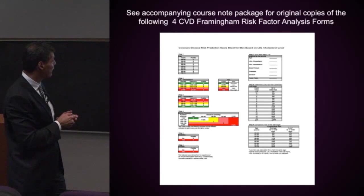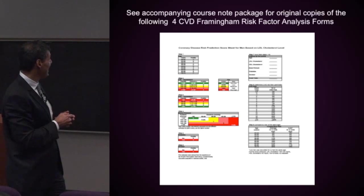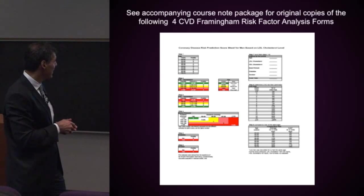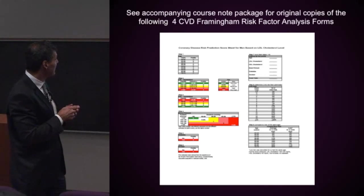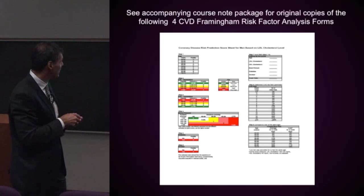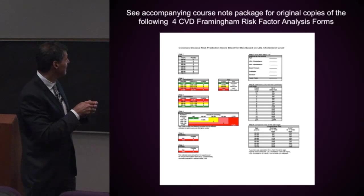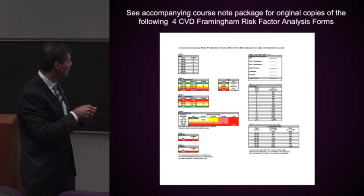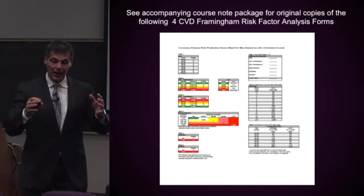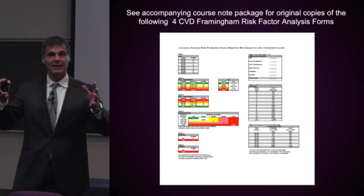Here we have a form for men — known as the LDL cholesterol form — because it looks at the person's age, their LDL cholesterol, HDL cholesterol, blood pressure, whether they're diabetic, and whether they're a smoker. A number of points are awarded based on those scores. You add up the points for age, LDL, HDL, blood pressure, diabetes, and smoking, then go down the list to see how many points they scored, and it tells you exactly what the person's risk of having a heart attack is over the next 10 years. There's also a form using total cholesterol for men, and then equivalent forms for women — one with LDL and one with total cholesterol.